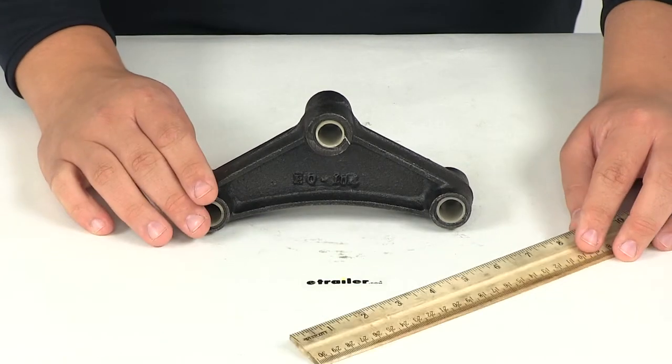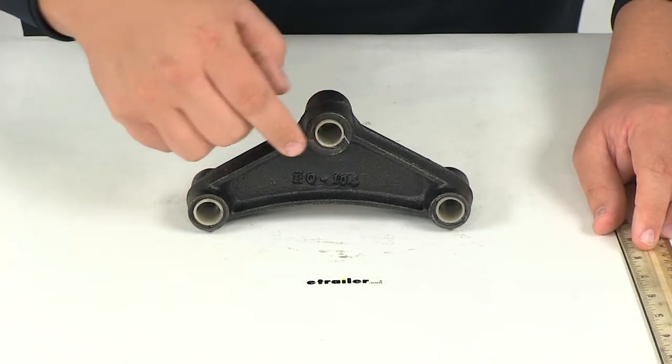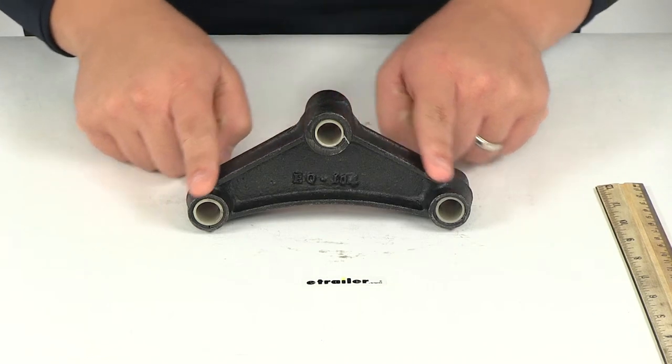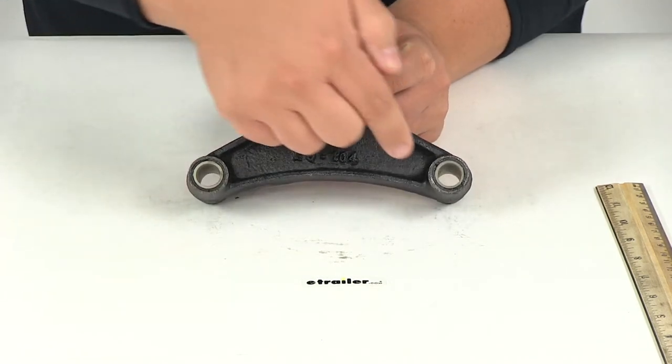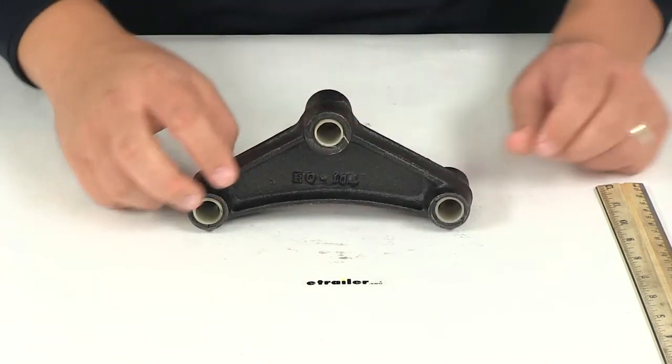As far as height goes, the way we measure the height on these is from the center of this hole to the center of these holes down here. We do not measure at an angle. We act as if there's an imaginary line coming across here, center on center, and then we measure straight down to that line.